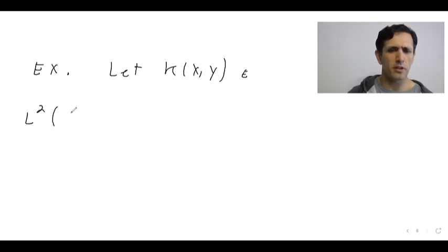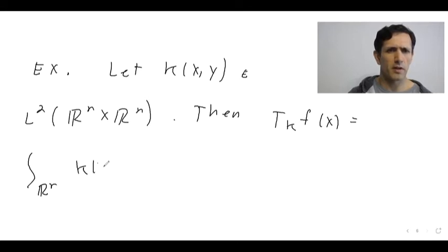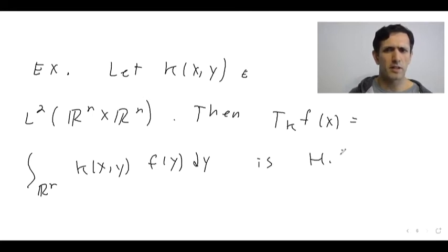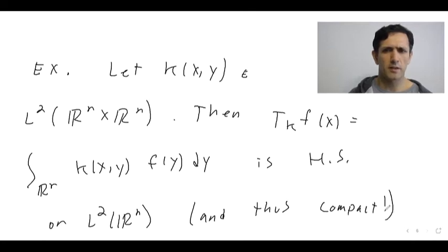Let's say K is in L2 of Rn times Rn. Then I claim that the integral operator with kernel K—meaning the operator that sends f to the integral of K(x,y) f(y) dy—is Hilbert-Schmidt on L2 and thus compact. So we have a very nice simple sufficient condition for compactness of an integral operator.